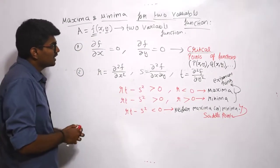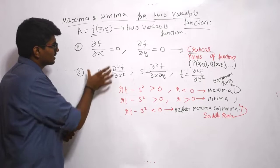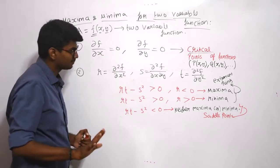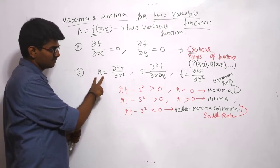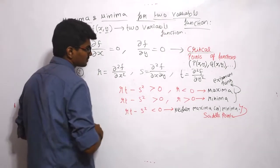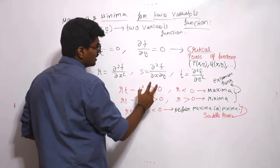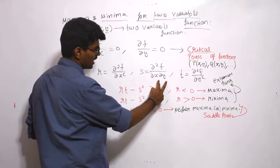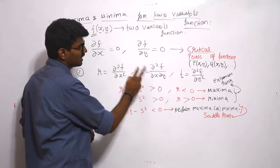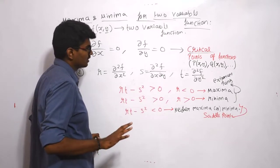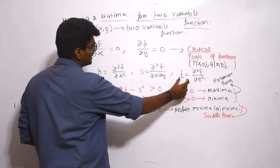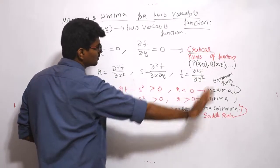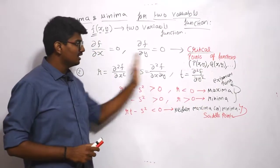The second step is to differentiate the function f twice with respect to x partially — that is taken as r. Then differentiate f first with respect to x and then with respect to y — that is taken as s. And t is differentiating the function f twice with respect to y.